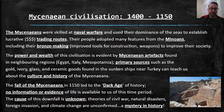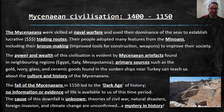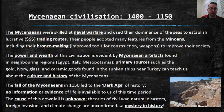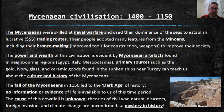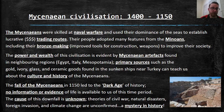The fall of the Mycenaeans in 1150 BCE led to the Dark Age of History — no information or evidence of life is available to us from this time period. It's essentially as if history turned the lights off for about 300 years. No one really knows what caused this. The cause of the Mycenaean fall is unconfirmed. There are theories — it might have been civil war, more natural disasters, foreign invaders, or even early climate change, where droughts and famine caused people to die off. It's a mystery in history, which is one of the things I love about history.